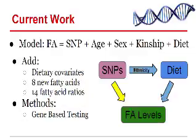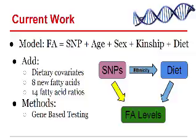What we did was take the same model but added a dietary covariate, eight new fatty acids, and 14 fatty acid ratios. The thinking is that there are two significant ethnic groups in the Framingham dataset — Italian and Irish — and inherently within those ethnicities there may be variances in diet. We believe fatty acid levels may be better predicted by adding the dietary covariate, since ethnicity may influence diet which in turn influences fatty acid levels. We also used gene-based testing as a new method, such as the GATES test.